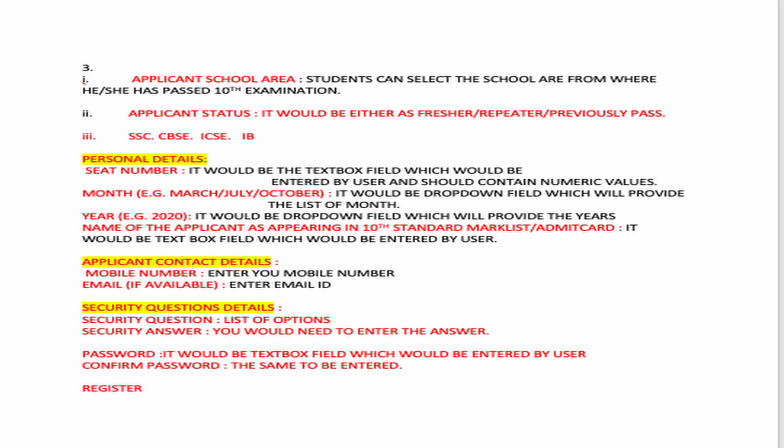Then you go to Personal Details. Students, for personal details take your hall ticket in hand — everything is mentioned on the hall ticket. You have to type in your seat number in a text box field, which should contain only numerical values. Fill in your seat number there.